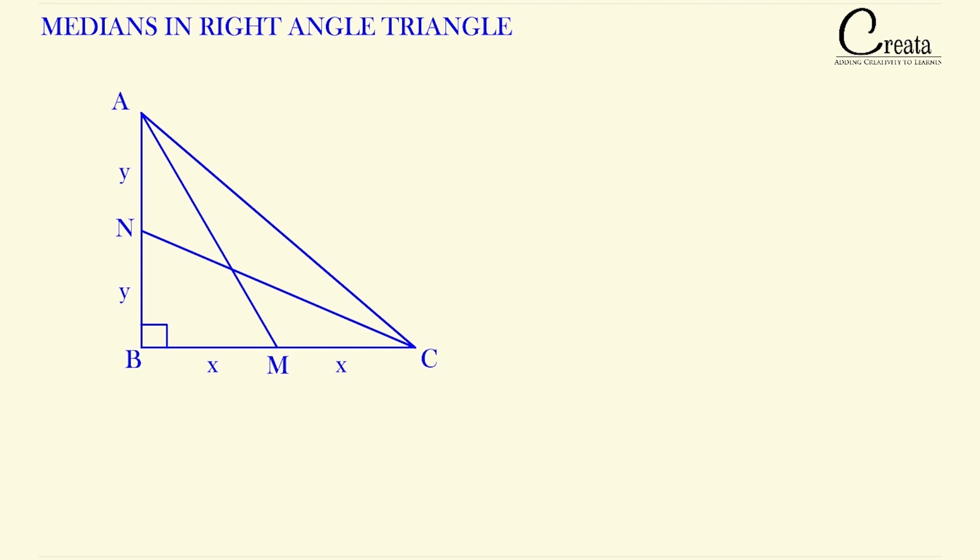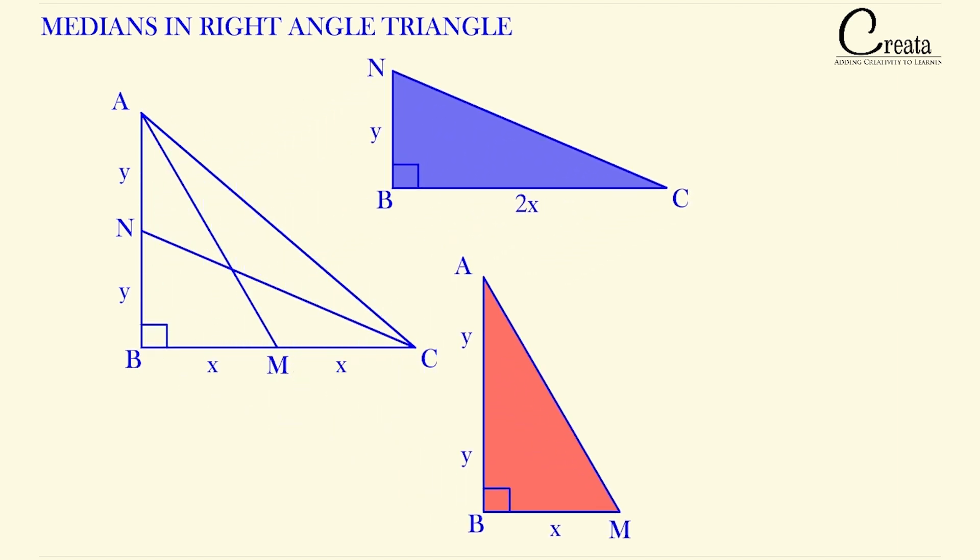Further, are you able to observe triangle ABM and triangle NBC? These two triangles are also right angle triangles. Let's take these two triangles out of the figure. If we apply the Pythagoras in both of these triangles, we got for the first triangle, that is triangle ABM, X square plus 2Y square is equal to AM square. Here AB will be Y plus Y, that is 2Y.